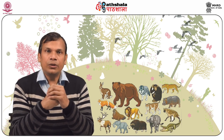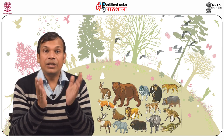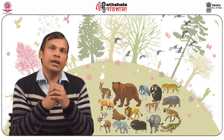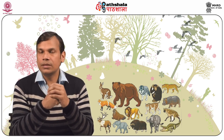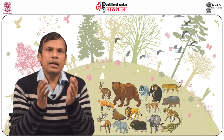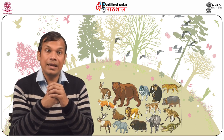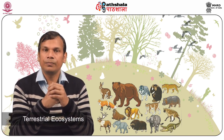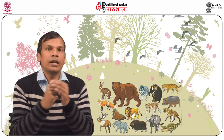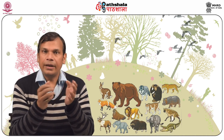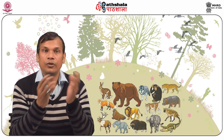Natural ecosystem: this ecosystem is formed and maintained in natural ways without any major interference by humans. They are further classified on the basis of kind of habitat. The first is terrestrial ecosystem, which consists of grassland ecosystem, savanna ecosystem, taiga ecosystem, tundra ecosystem, desert ecosystem, and forest ecosystem.